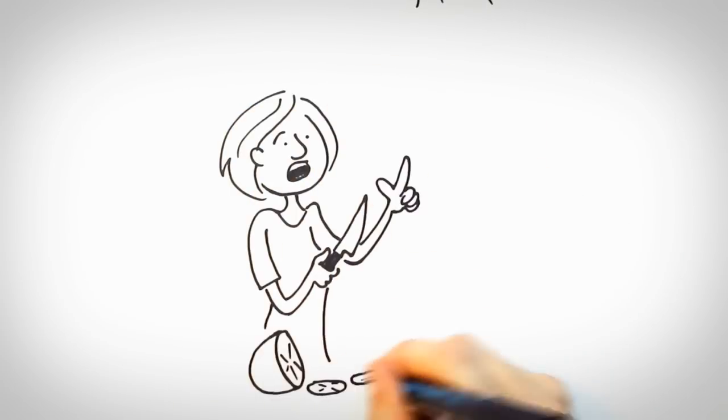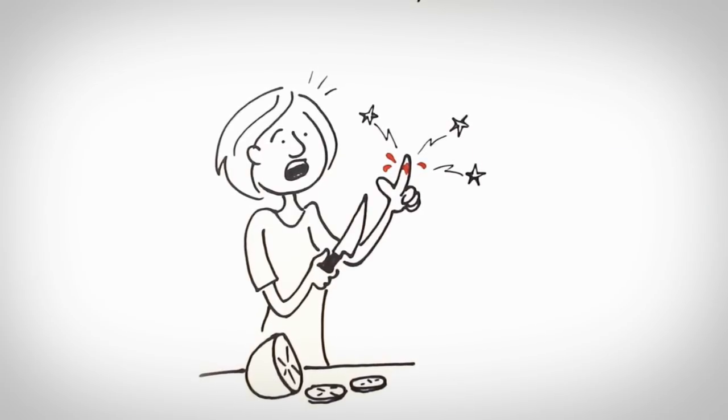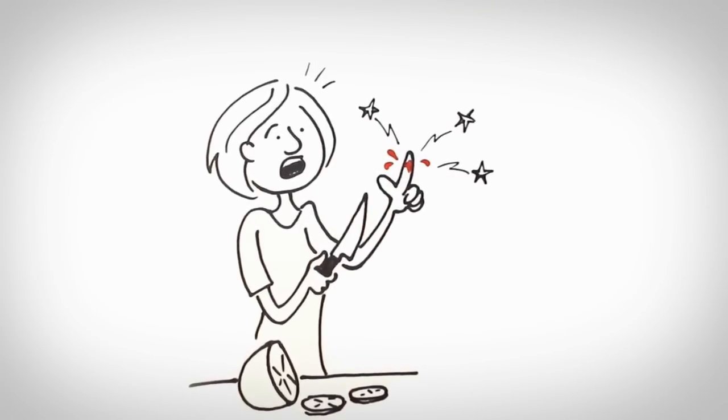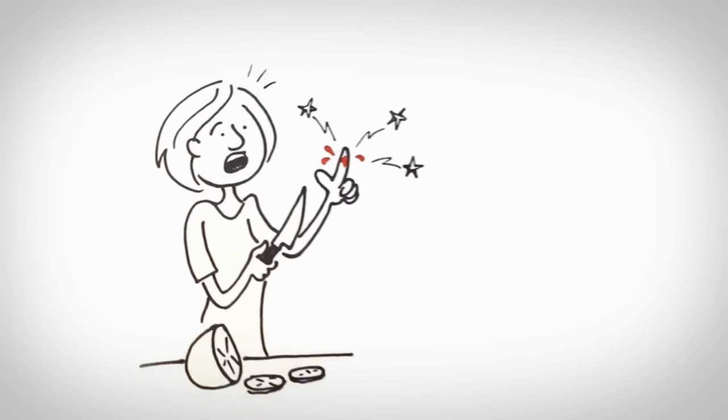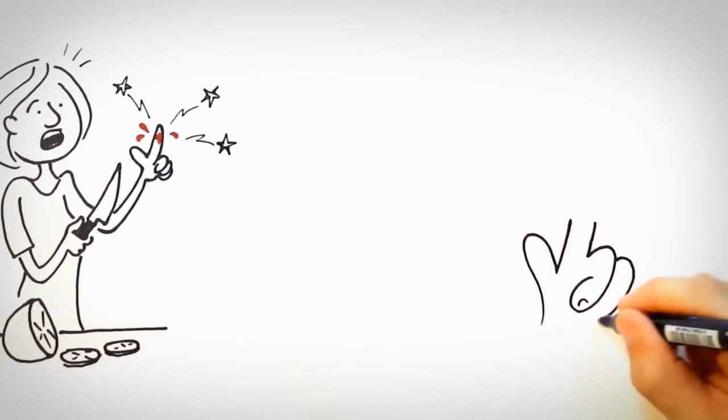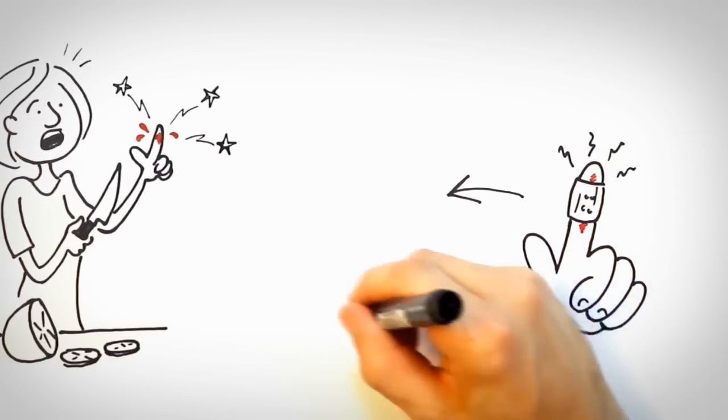Tissue pain, for example, is caused by an injury anywhere in the body. Think of a cut or a sprained ankle. Tissue pain is usually temporary and disappears as soon as the injury recovers. This is why people call it acute pain.